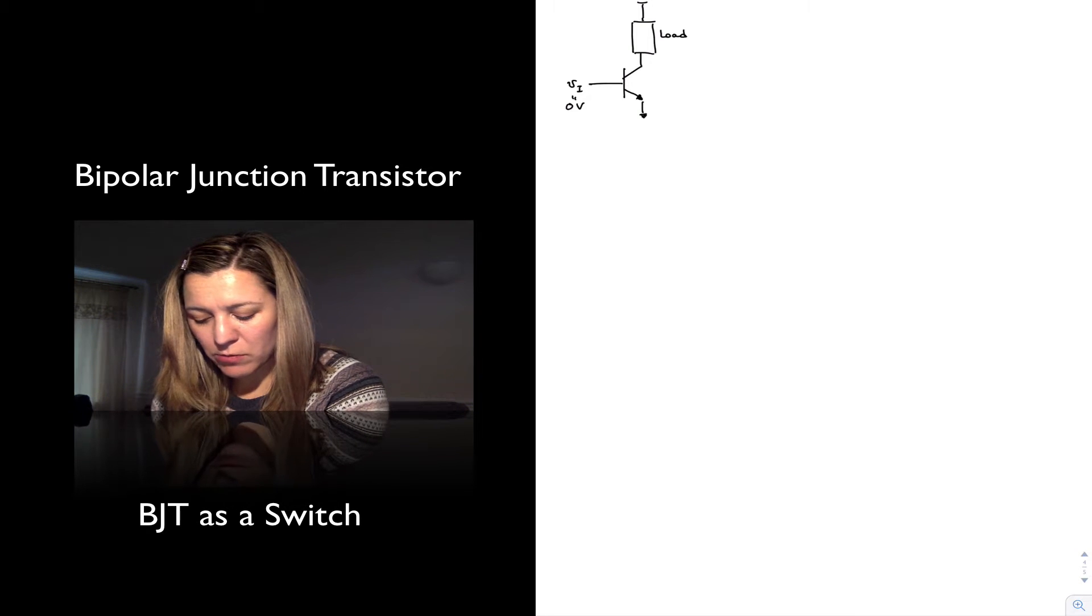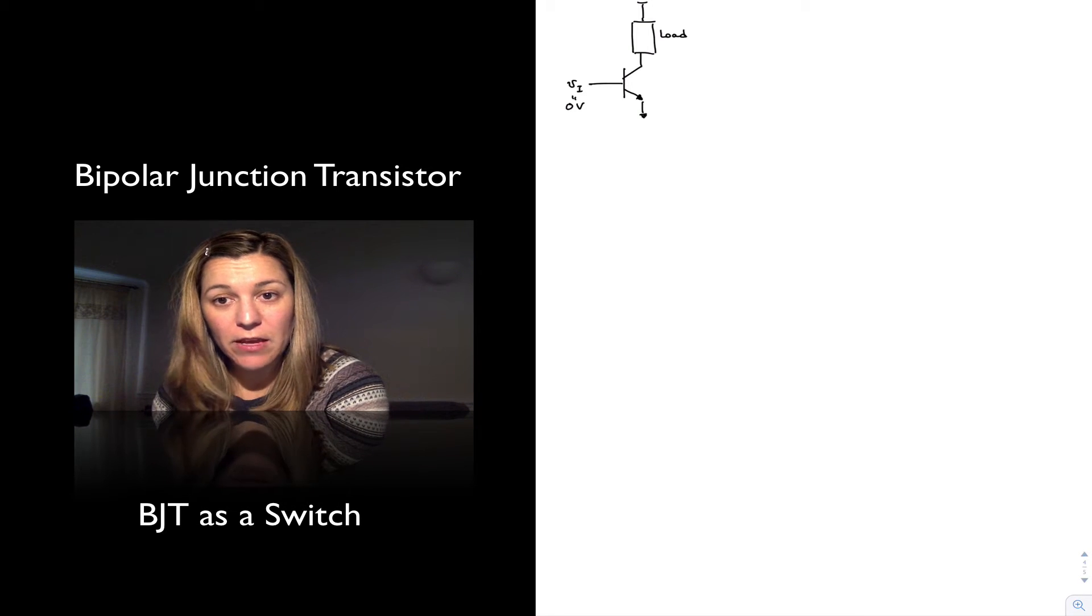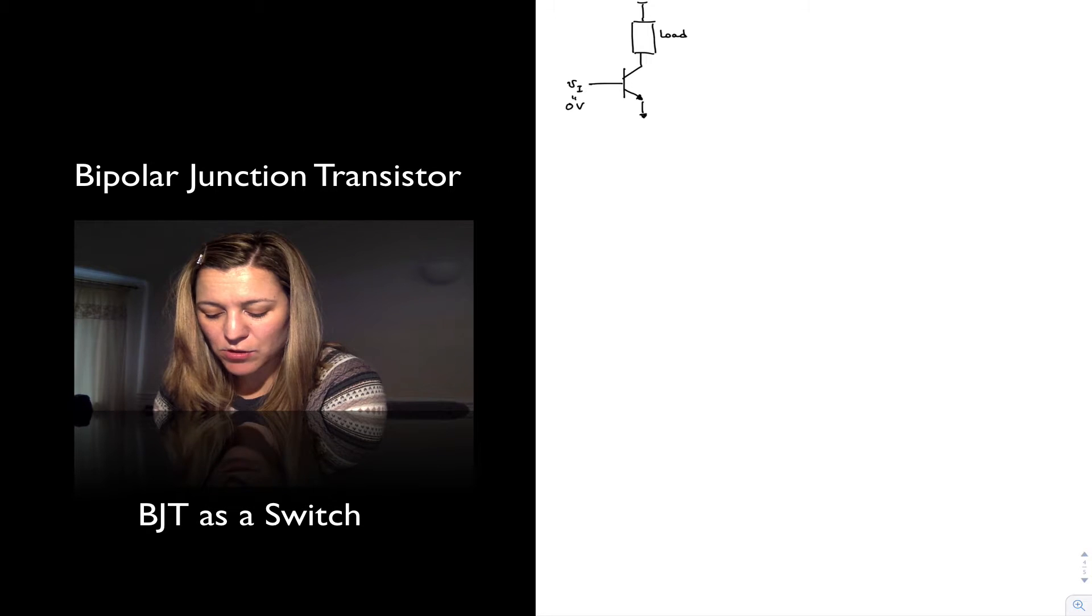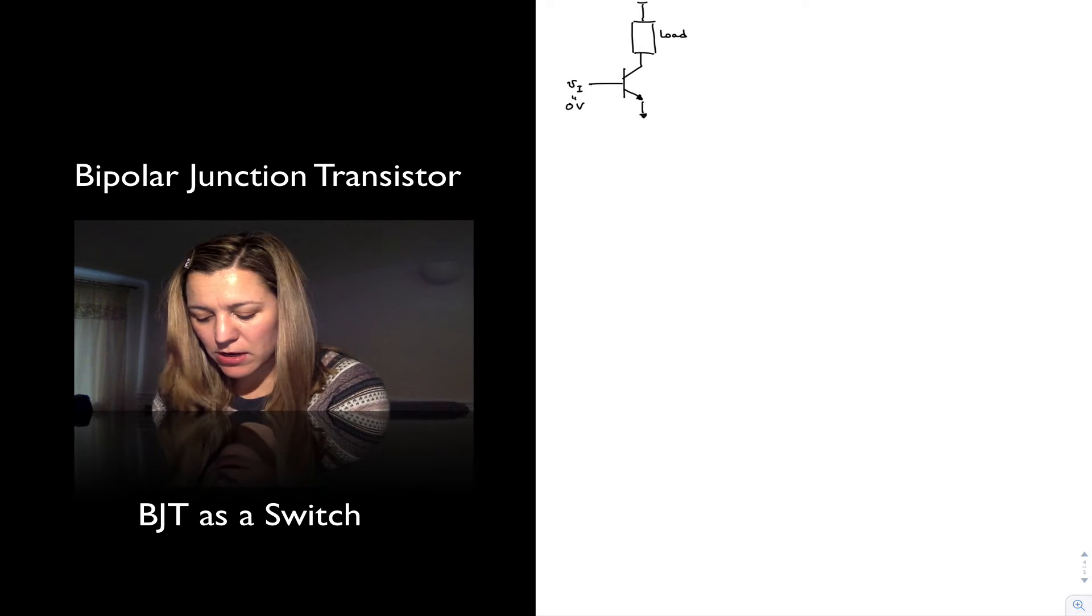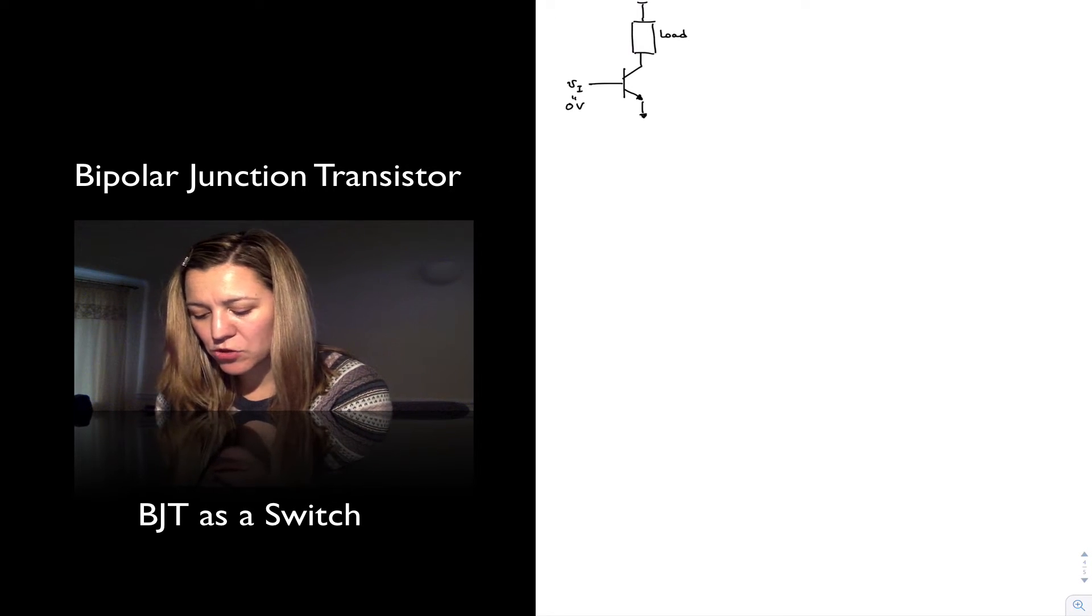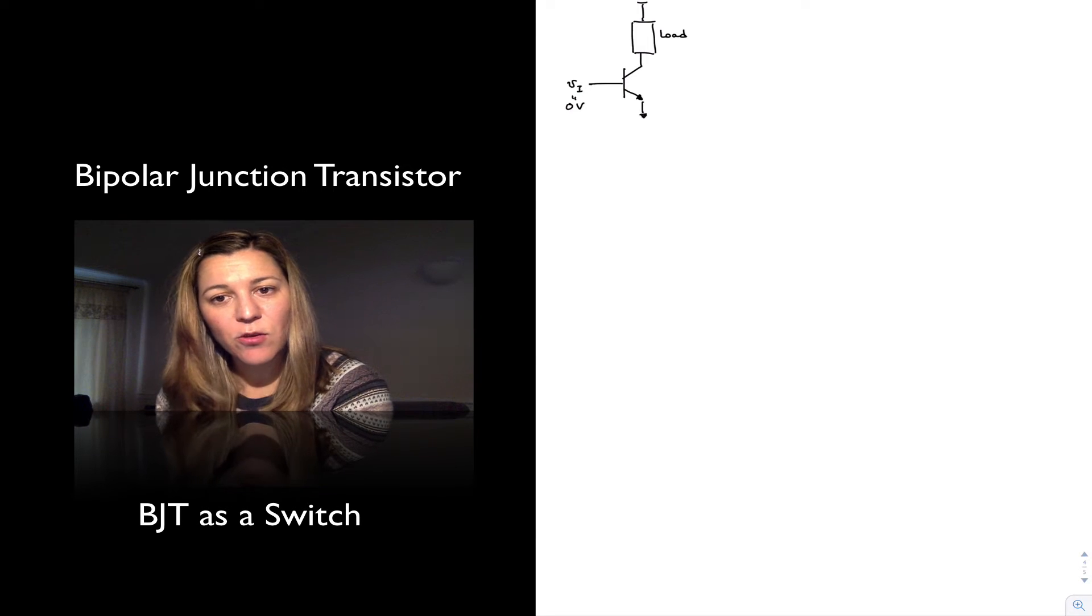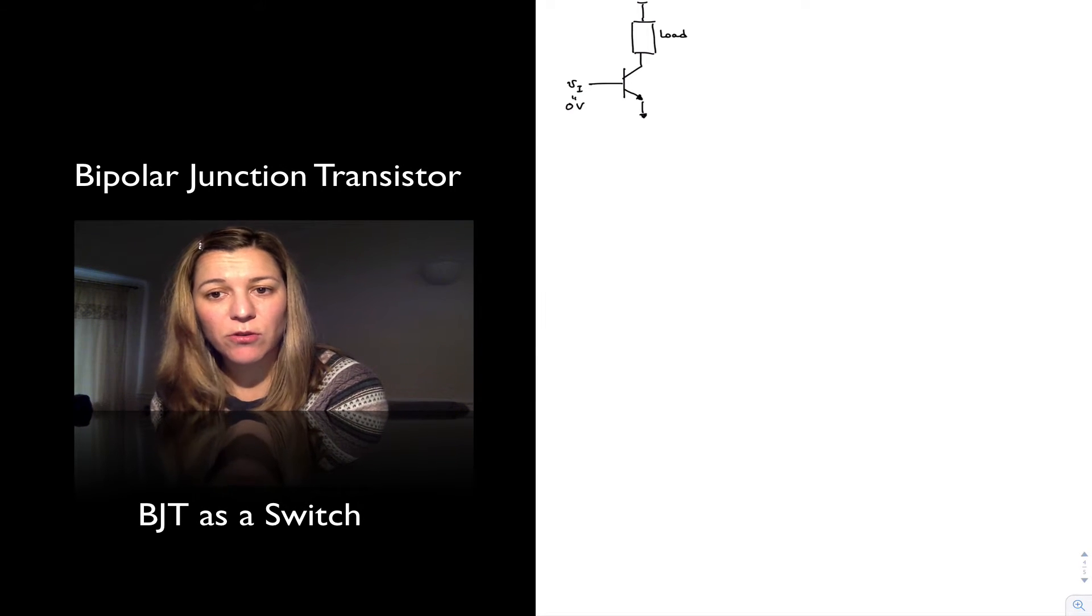If I turn on my transistor by applying a certain voltage into the base, in this case, because I haven't put any resistors there, it will just be 0.7 volts to turn on the base emitter junction. Now I'm getting some current flow through my transistor, so some current flow through my load.